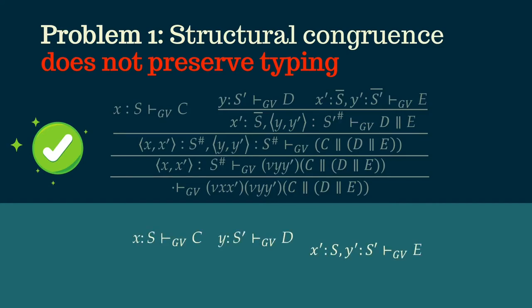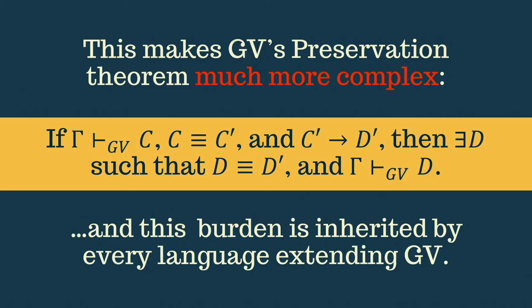If we try and re-associate to the left, however, we run into problems. The issue is that C and D don't communicate, so we can't put them in parallel. Similarly, there's no way to join E to the rest of the configuration. Now, this makes the meta theory really unpleasant to work with. So in particular, we need a more complex preservation theorem, and every language extending GV must then either inherit this burden or give up on proving deadlock freedom altogether.